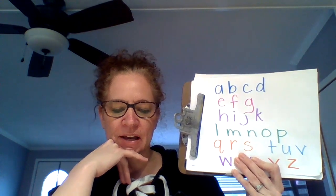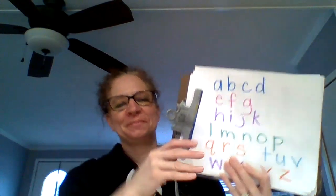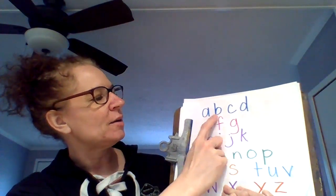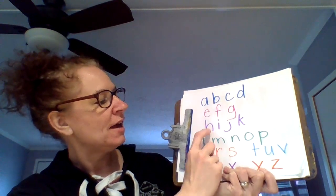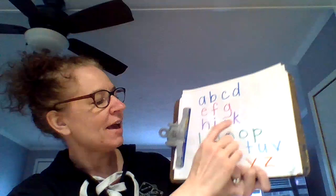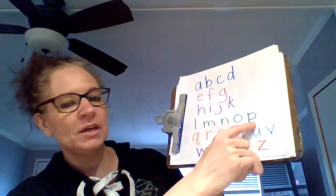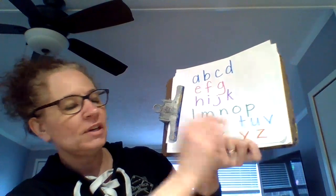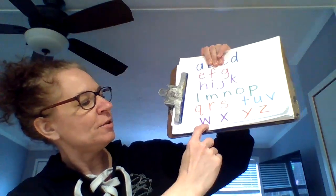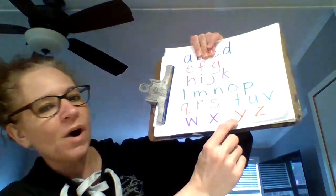We're going to sing the alphabet. A, B, C, D, E, F, G, H, I, J, K, L, M, N, O, P, Q, R, S, T, U, V, W, X, Y, and Z. Now I've sung my ABCs. Let's get started on Haggerty.